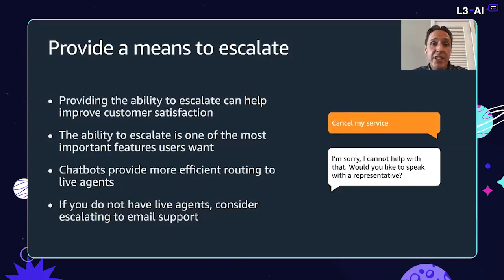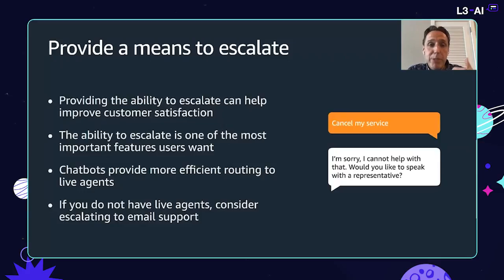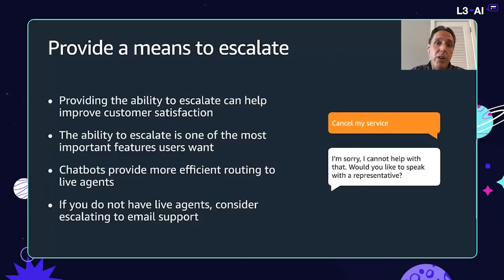Regarding escalation: while businesses build chatbots to reduce call volume, providing a path to escalation is still important for the overall customer experience. In a survey, 70% of users said that's what they wanted. Chatbots can escalate more efficiently by passing along context to help the agent answer questions. If you don't have live agents, you can escalate users to your email system so they can still get additional help.